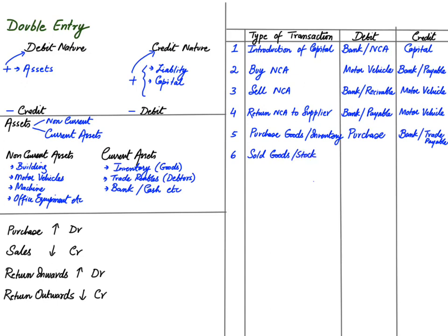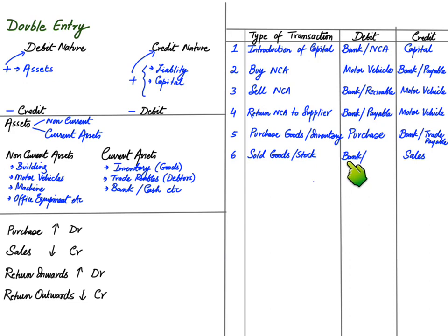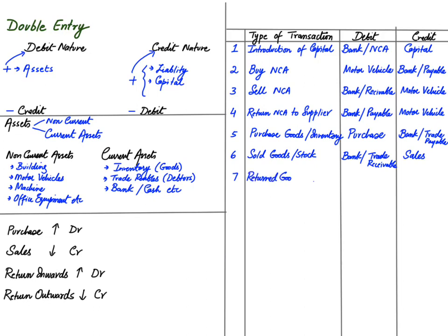Sold goods to a customer: whenever we are selling goods to a customer we credit the sales account, because the asset that is stock is going down. If we receive money in cash we debit a cash account; if we receive a check from the customer we debit a bank account. Maybe we are selling goods on credit — then there comes the role of trade receivables, which are customers to whom we have sold goods on credit basis. Trade receivable is also an asset, so we debit it. We write trade receivable if we don't know the customer's name; if we know, we write the specific name such as Mr. Ali.